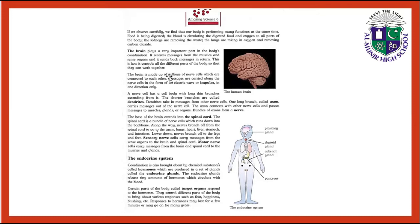The brain is made up of millions of nerve cells which are connected together. Messages are carried along the nerve cells in the form of an electric wave or impulse in one direction only.